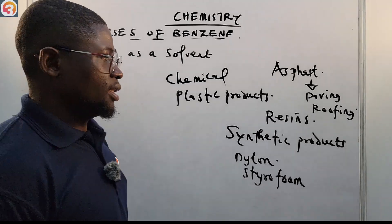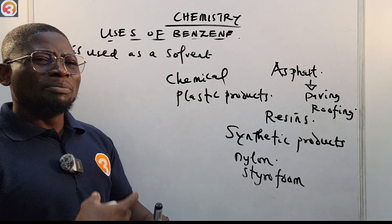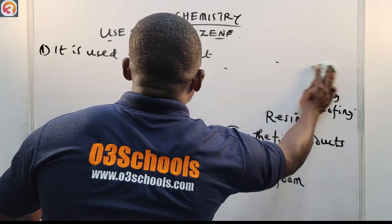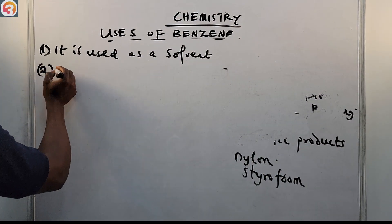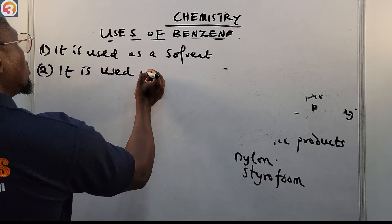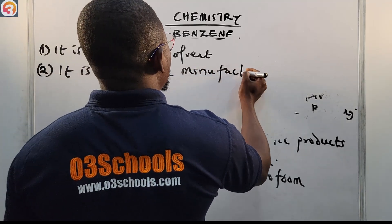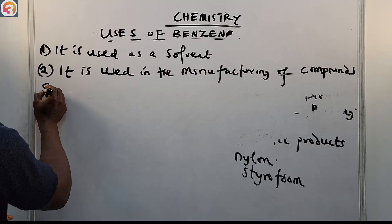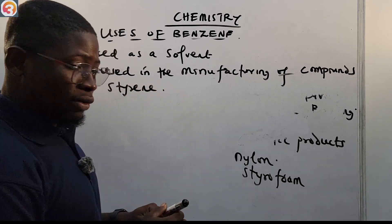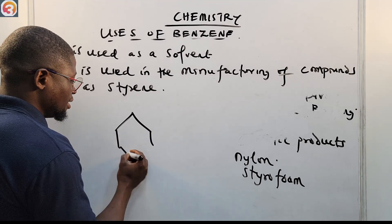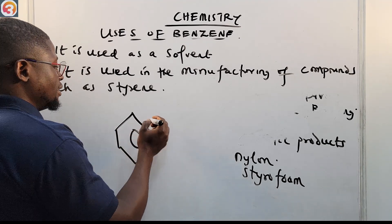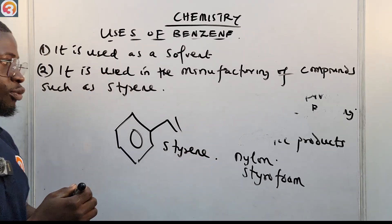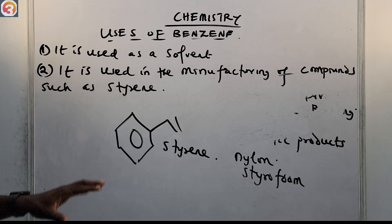Benzene is also used in the manufacturing of other compounds. For example, styrene — which is a benzene ring with a double bond. If you haven't watched the benzene derivatives lesson, go back and watch it. Styrene is used in the production of nylon.